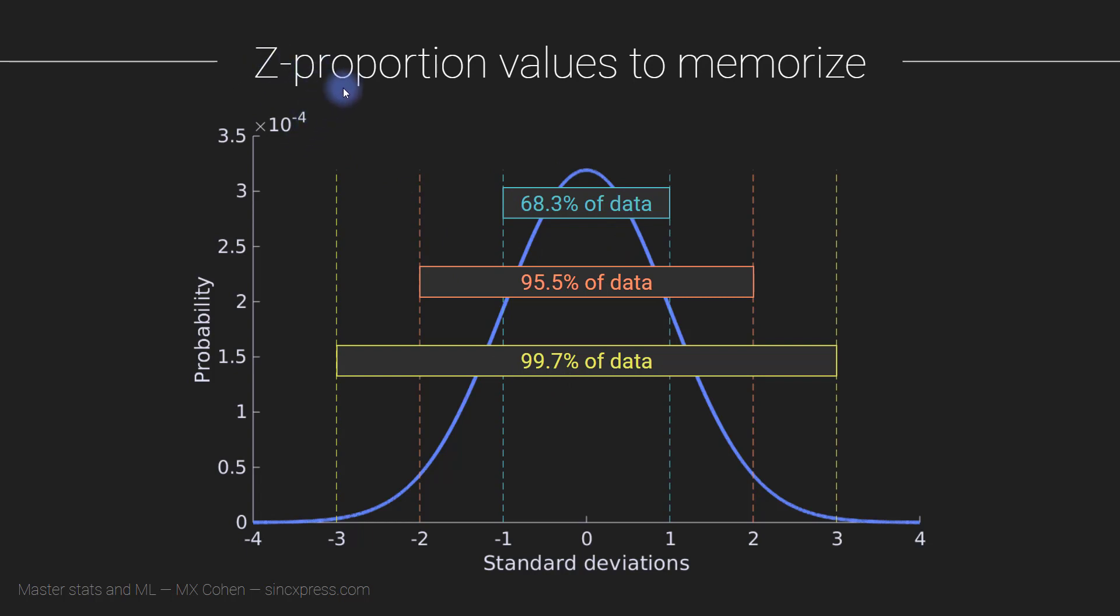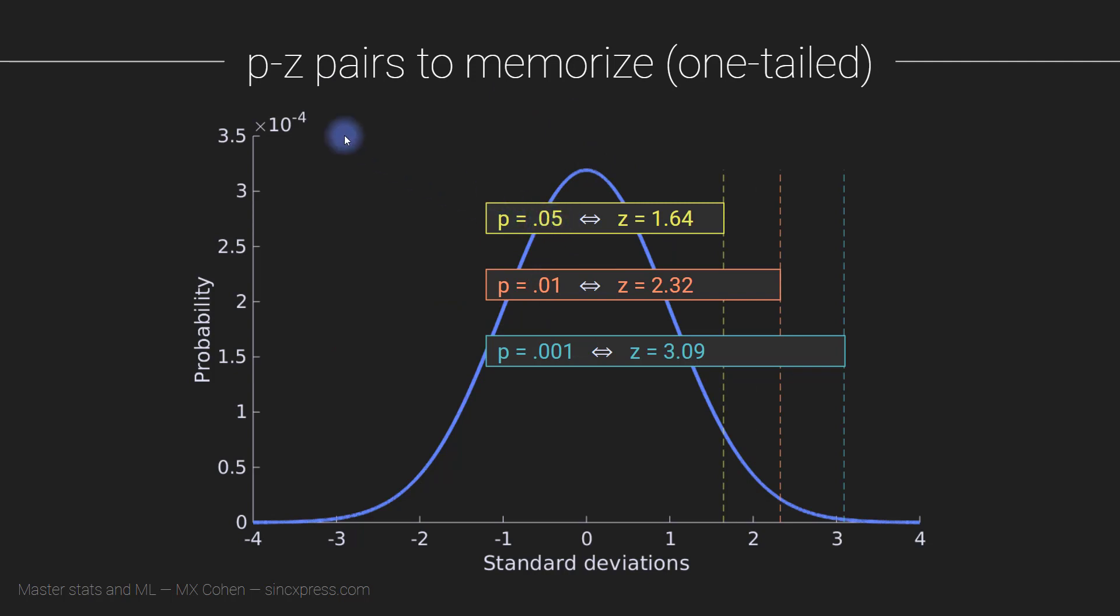These numbers you should commit to memory in my opinion. I recommend it. This is just about z-values and proportion of the data set.